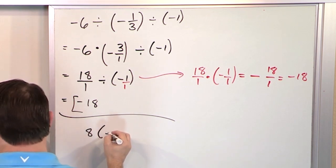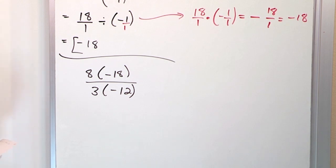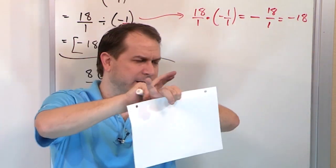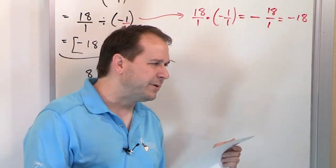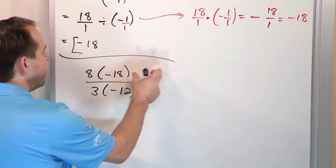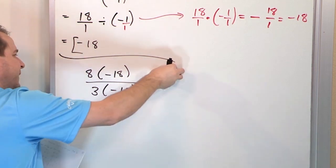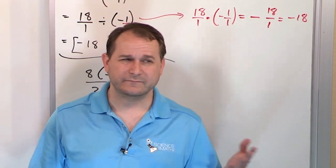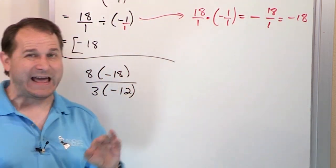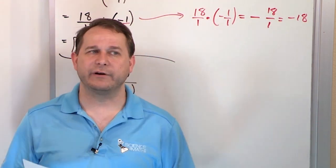What if we have 8 times negative 18 on the top of a fraction, and 3 times negative 12 on the bottom? A lot of students get confused when you have very large terms in the numerator and denominator. You could take 8 times negative 18 to get a big number on the top, and 3 times negative 12 to get negative 36 on the bottom, then simplify the fraction. But it's easier if you can simplify ahead of time by dividing by common terms, so your final answer is already simple.